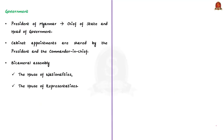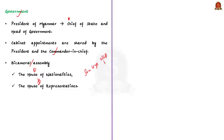The president of Myanmar is both the chief of state and head of government. Cabinet appointments are shared by the president and the commander-in-chief. Myanmar has a bicameral assembly: the House of Nationalities and the House of Representatives. Elections were recently held to the assembly, and Aung San Suu Kyi's National League for Democracy is expected to win again. From this discussion, try to know about the geography, history, and polity of Myanmar from an exam perspective.